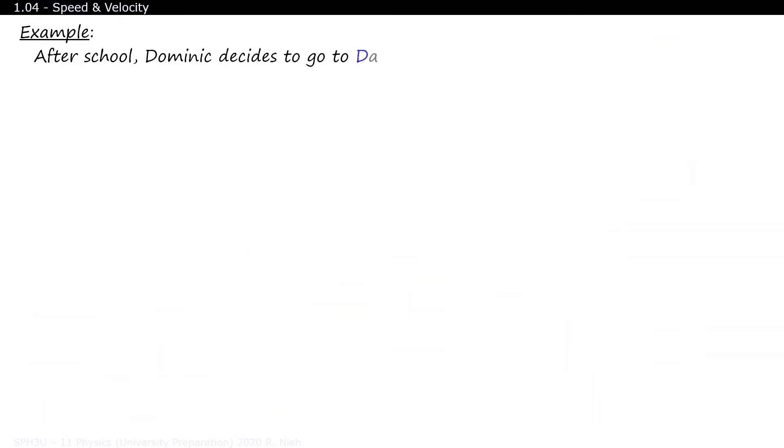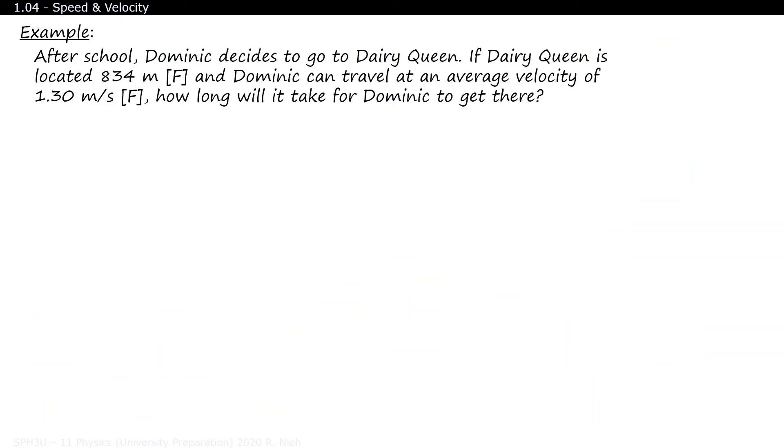Let's go through a formal example. After school, Dominic decides to go to Dairy Queen. If Dairy Queen is located 834 meters forwards, and Dominic can travel at an average velocity of 1.30 meters per second forwards, how long will it take for Dominic to get there?